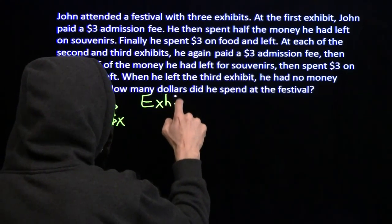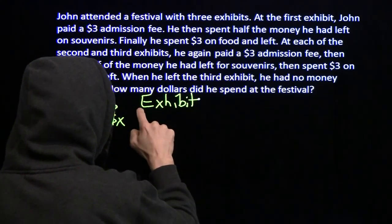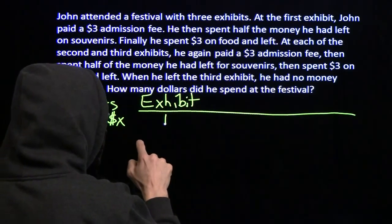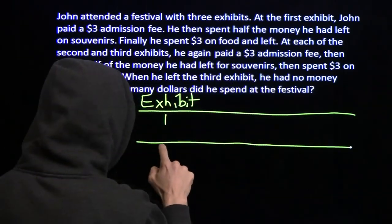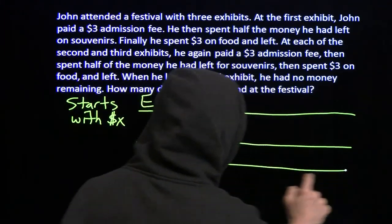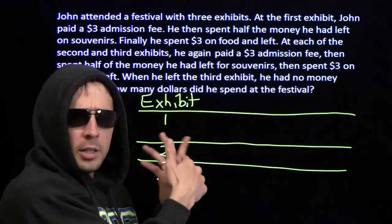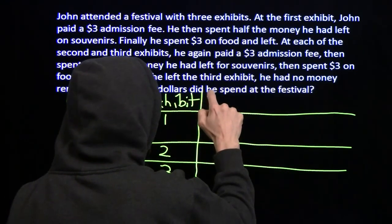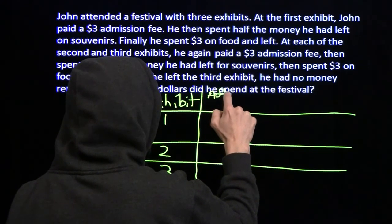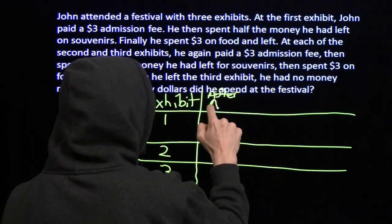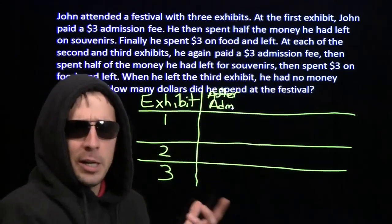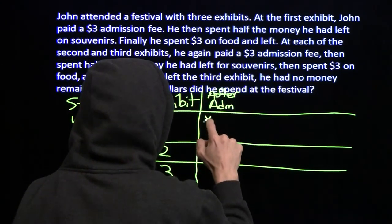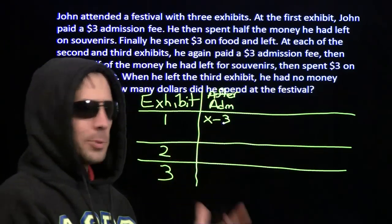I'm going to have one row for each of the exhibits: the first exhibit, the second exhibit, and the third exhibit. We're going to keep track of what's going on at each step as he's going through the process. We want to see what he has left after admissions. He walks into the first exhibit, pays his three bucks — he started with X — so after admissions, he has X minus three.